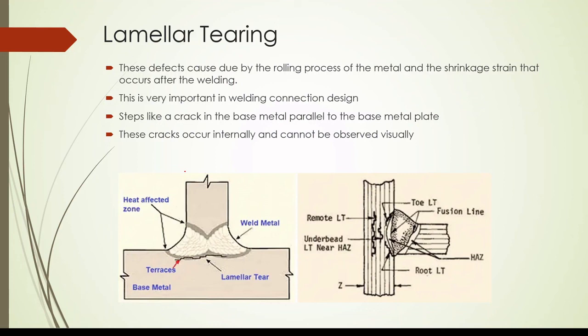The final defect we are going to discuss today is lamellar tear. This defect is caused by the rolling process of the metal and the shrinkage strain that occurs after welding. This is very important in welding connection design, because if there are internal cracks, there will be issues with the strength of the welding and there may be possibilities of breaking down the connections. Step-like cracks in the base metal parallel to the base metal plate occur internally, as you can see in this figure. Since these cracks occur internally, we cannot see them, so we have to be very careful about this kind of crack formation.